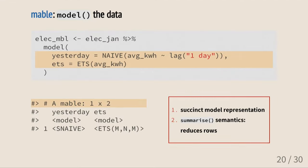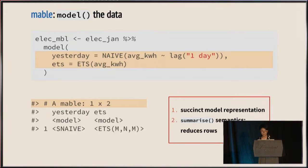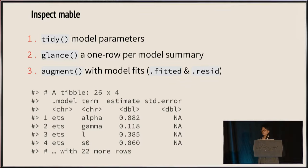Now we have a Mable back — a model table that contains model objects. Each cell shows a succinct model representation: a seasonal naive model and an ETS with three selected components. Models are a reduced form of the data, and the model function is an analog of summarize. To look at parameter estimates, information criteria, or residuals from model objects, we use the familiar broom functions: tidy, glance, and augment. Applying tidy on the Mable gives us parameter estimates — alpha, beta, and other ETS parameters.